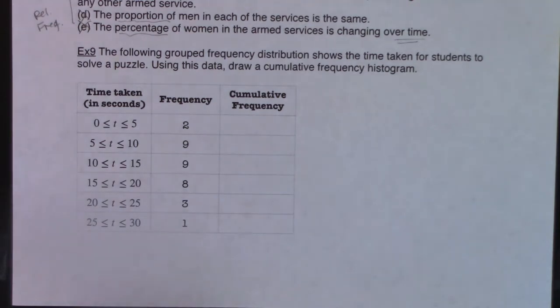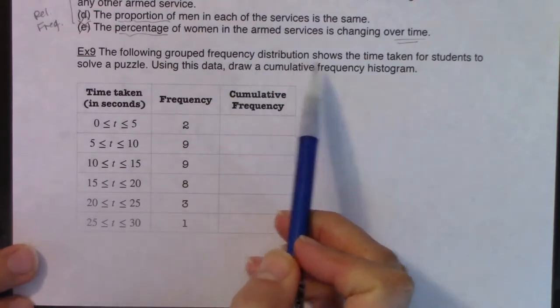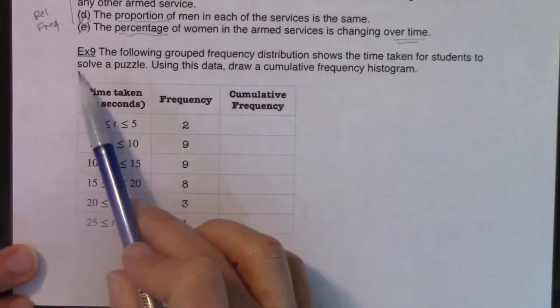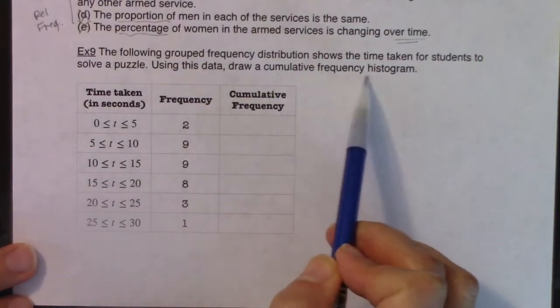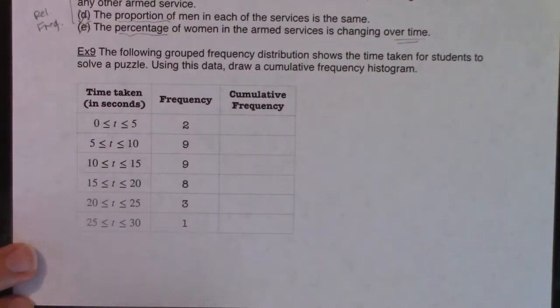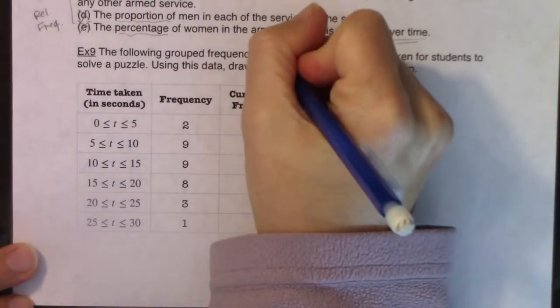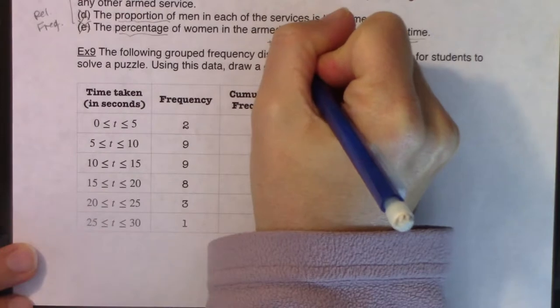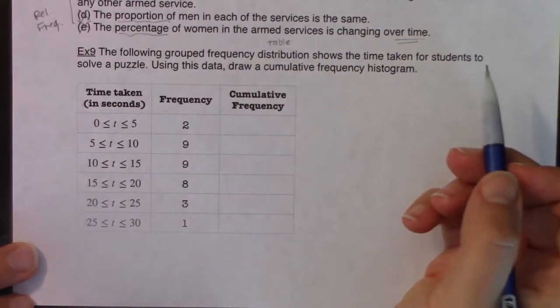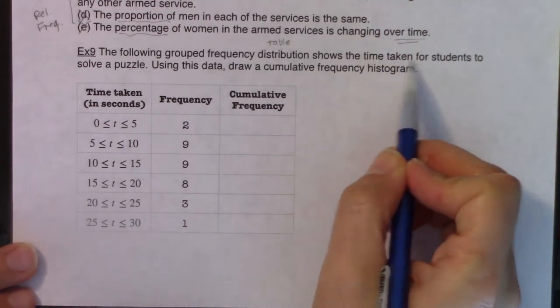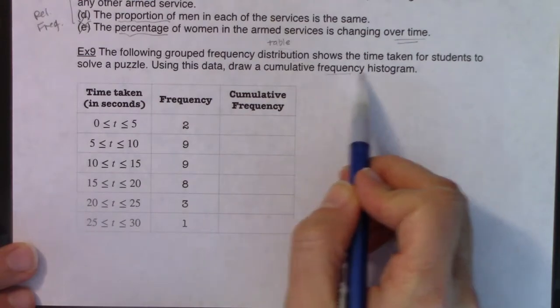Alright, so let's take a look at example nine. The following grouped frequency distribution shows the time taken for students to solve a puzzle using this data, draw a cumulative frequency histogram. So let's start to break down some of that vocab.